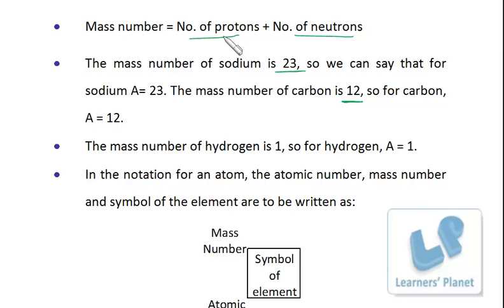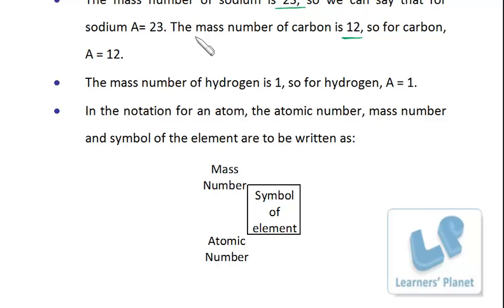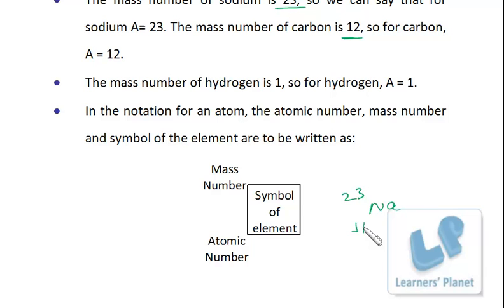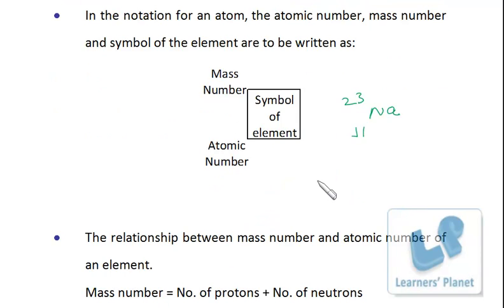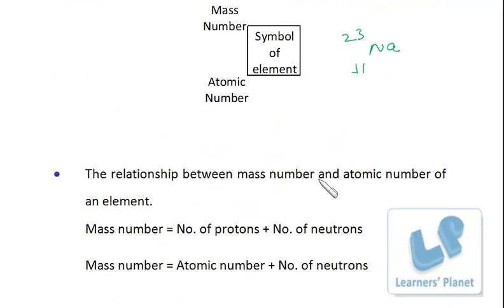The mass number of hydrogen is 1 because there is 1 proton, which means there are no neutrons in the hydrogen atom. To represent a symbol of an element, take sodium — Na. The mass number is written at the top and the atomic number at the bottom. So 23 represents the number of protons plus neutrons, and 11 represents the number of protons in the sodium atom.